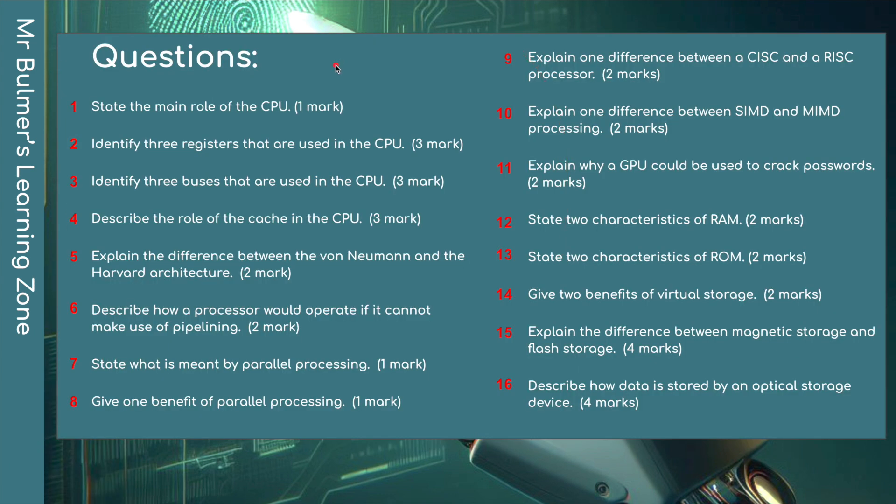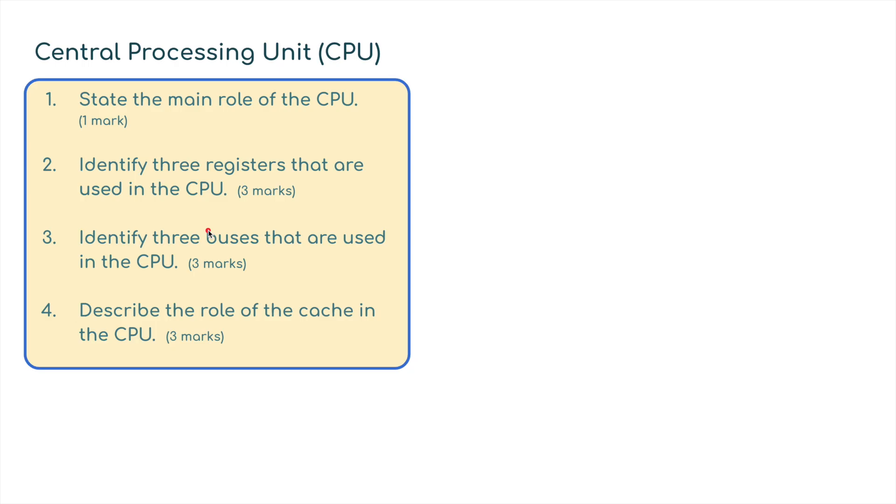So let's get started. There's 16 questions in total ranging from one mark questions all the way up to four mark questions. There will be a video to follow this on exam questions which are in the book as well. Here we have the first four questions covering the main role of the CPU, registers, buses, and cache, totaling ten marks.